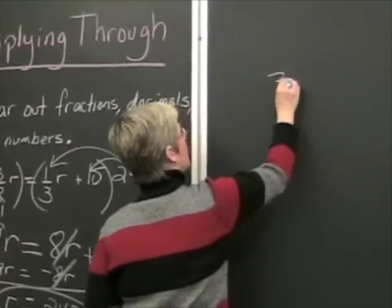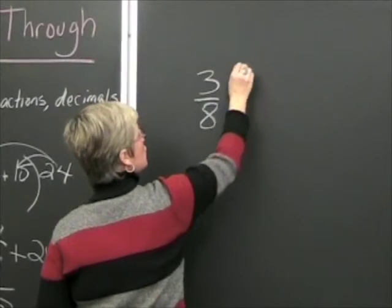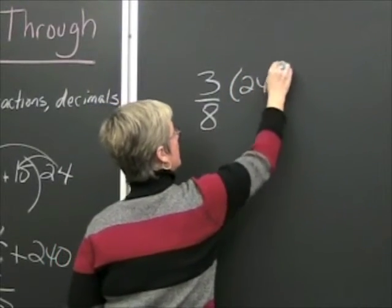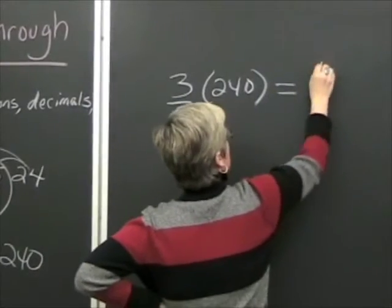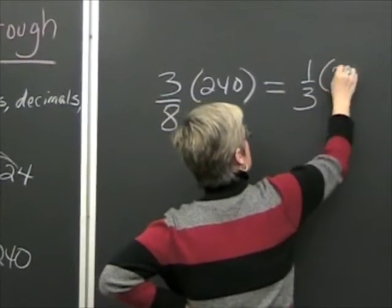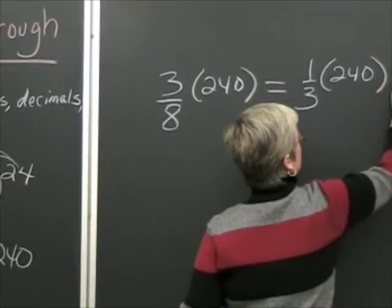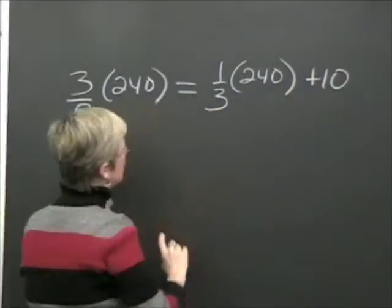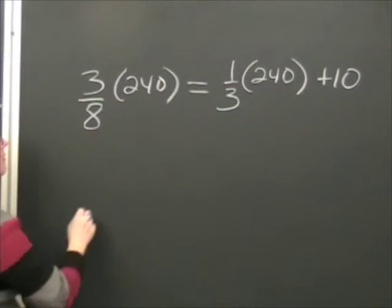Okay, let's take three-eighths times r, which we believe to be 240, and let's see if that really equals one-third times 240 plus 10. If we don't get a true statement here, we'll know we've done something wrong.